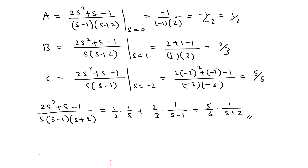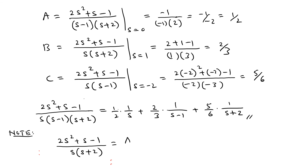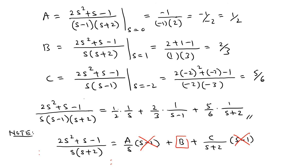Now, why does this method work? Let's look at finding B as an example. If you multiply both sides by (s - 1), the (s - 1) in the denominator cancels, giving (2s² + s - 1) over s(s + 2) equals A(s - 1)/s plus B plus C(s - 1)/(s + 2). When you plug in s = 1, the A and C terms both go to zero, leaving just B. The same argument applies to all other terms — that's why the cover-up method works.